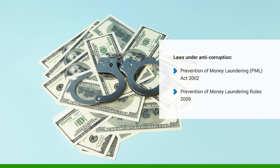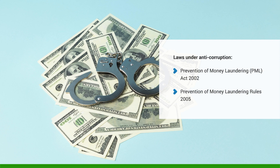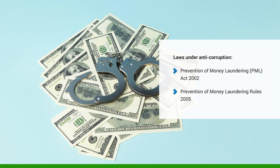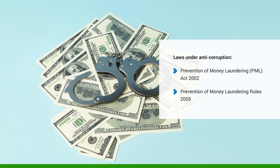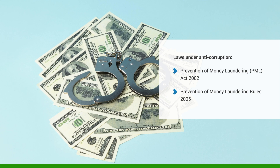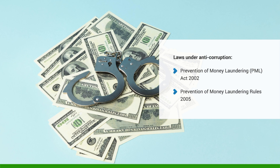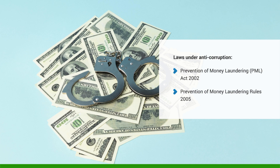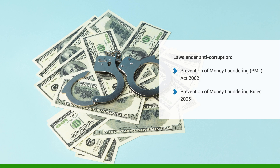In a recent judgment from the Supreme Court of India, it was held that the word 'and' appearing before the phrase 'projecting or claiming it as untainted property' would have to be read as 'or,' thereby giving an expansive interpretation of the meaning of money laundering. As per the judgment, projecting or claiming the property as untainted property would constitute an offense of money laundering independent of other acts which may constitute an offense under the PML Act.